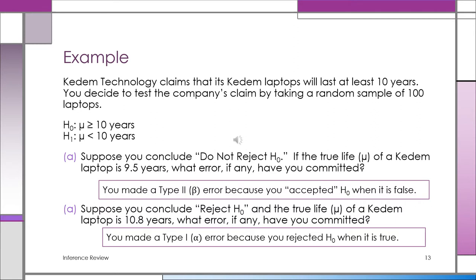Conversely, if you reject H₀ based on sample evidence but the true life of the laptop is actually 10.8 years, you've made a Type 1 (alpha) error — you rejected H₀ when it was actually true.